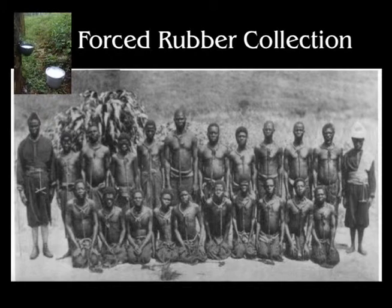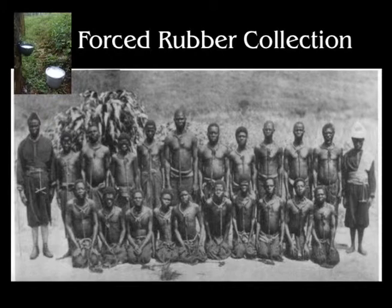The rubber collection was really dangerous. These men actually had to climb up sometimes hundreds of feet into trees and collect the rubber. You slit the rubber vines and then wait at the bottom for the rubber to slowly drain out into pots. The quotas got higher and higher, and at the same time the men were having to go farther and farther from their homes to meet their quotas, exposing them to all sorts of dangerous conditions in the jungle.